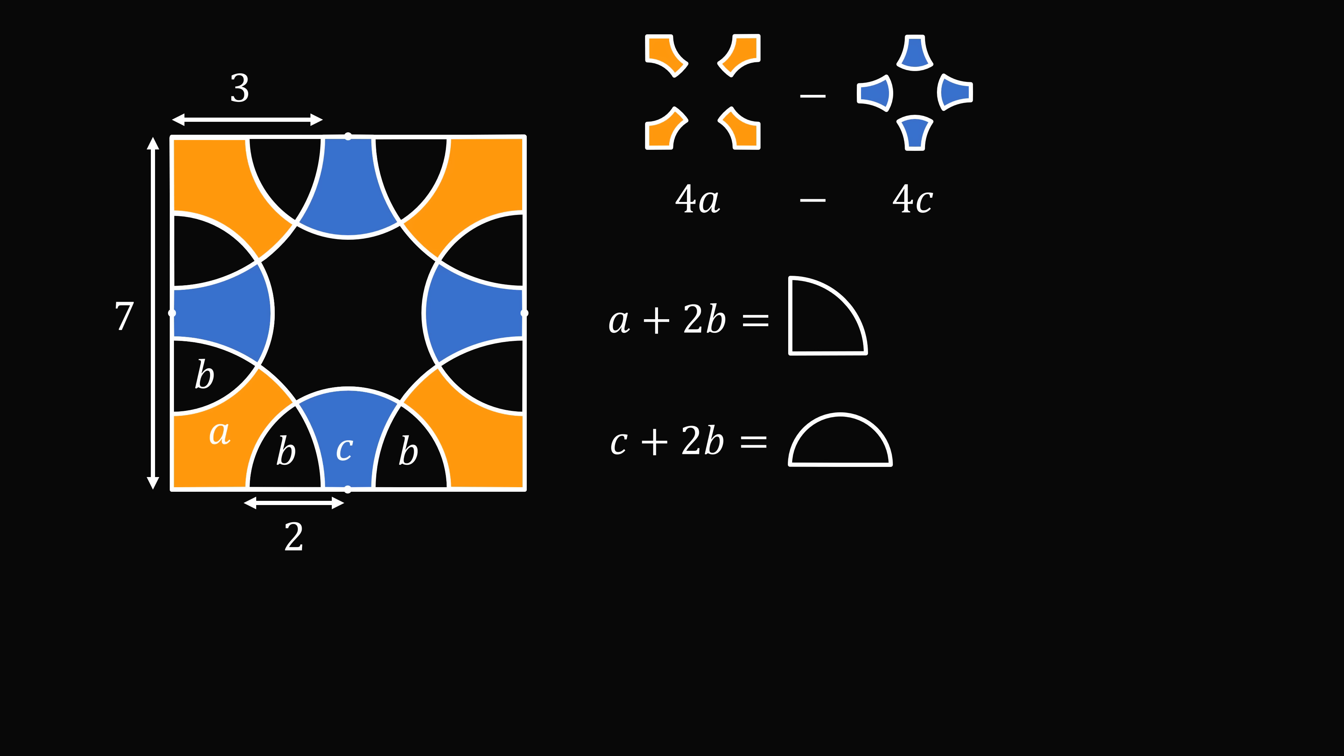So, we have 4a plus 8b is equal to 4 times the area of a quarter circle. Then, we have 4c plus 8b is equal to 4 times the area of a semicircle.